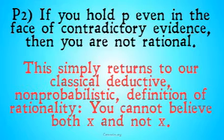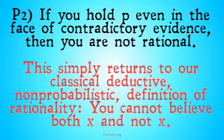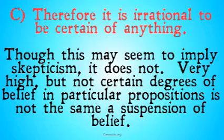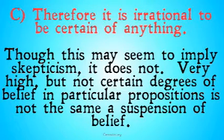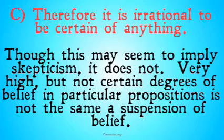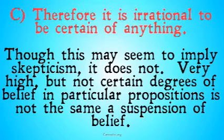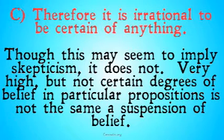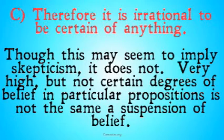Therefore it is irrational to be certain of anything. It may seem that this implies skepticism, but it doesn't. Very high but not certain degrees of belief in particular propositions is not the same as the suspension of belief that the skeptic wants. Just because it's irrational to be certain of anything doesn't mean we give up the game. Bayesians are allowed to have degrees of belief, so they don't lose simply by not being allowed to be certain. We'll look at problems with this fallout from the solution to the dogmatism paradox in our objections series, but the Bayesian isn't down for the count yet.